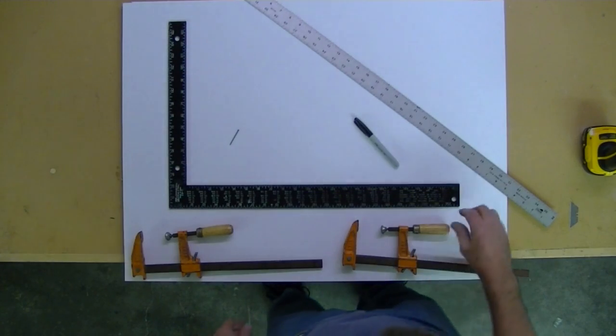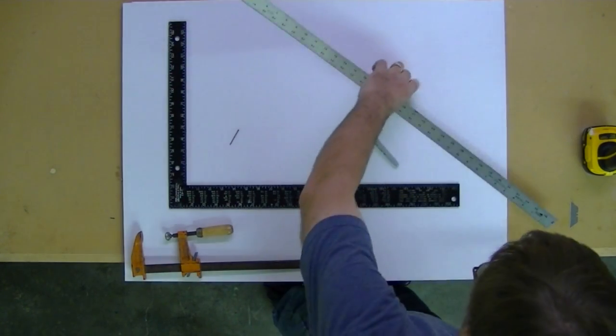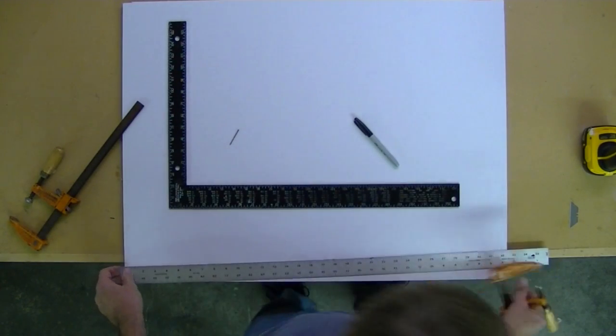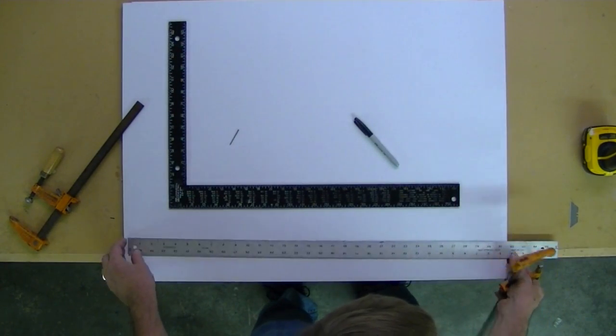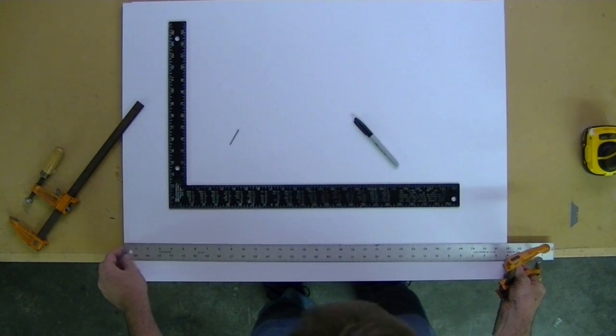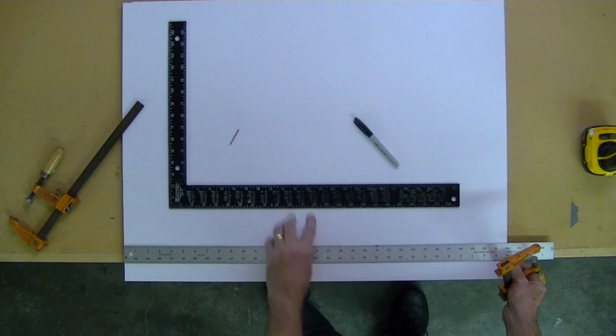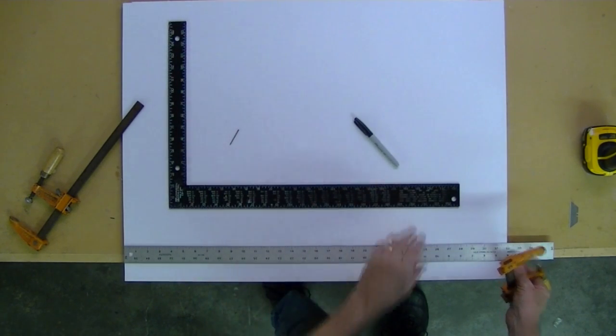And here's how it goes. I'm going to clamp the straight edge in place. This edge will form the base of the parabola, the deepest part of the parabola.